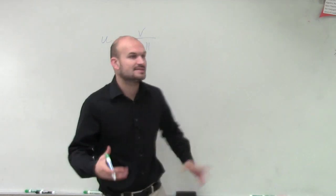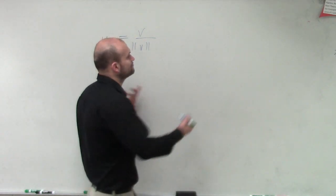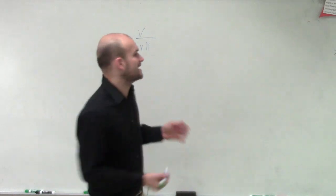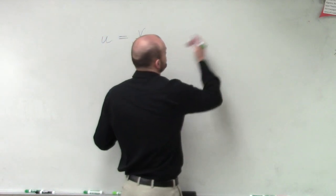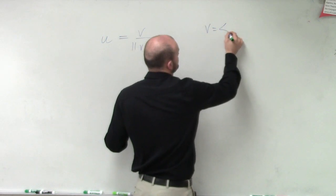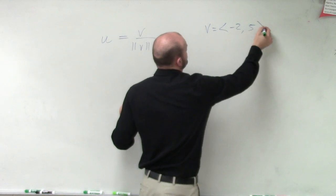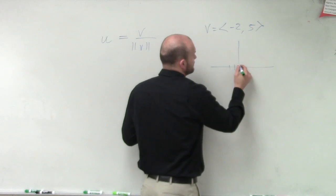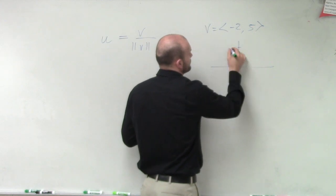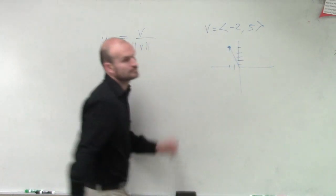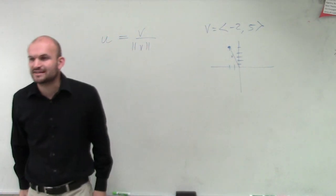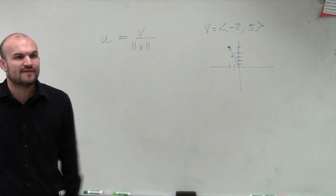Vector v, let's say we have a vector. Let's see, what did I write down? Let's say we have a vector <-2, 5>. So that looks something like this. Negative 2, 5: 1, 2, 3, 4, 5. Right? That's vector v. And I say, what is the unit vector of v? Find the unit vector.